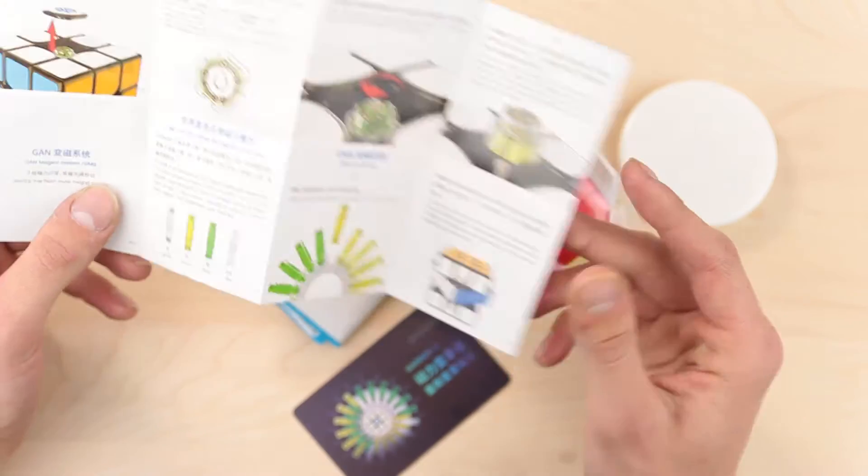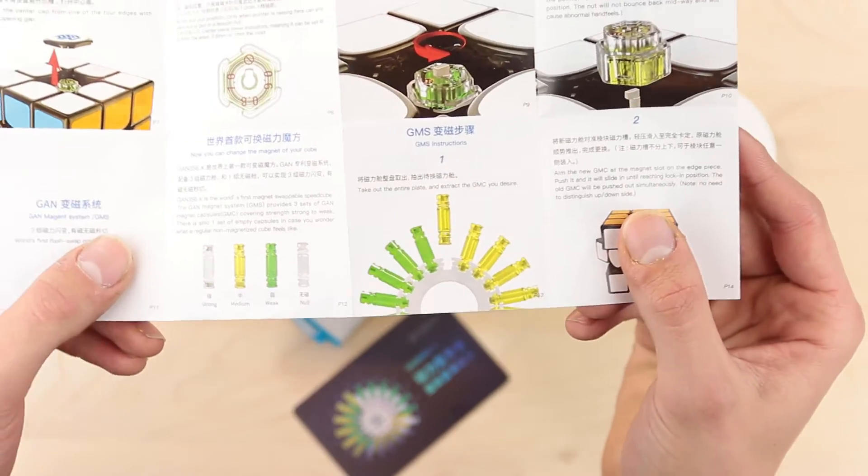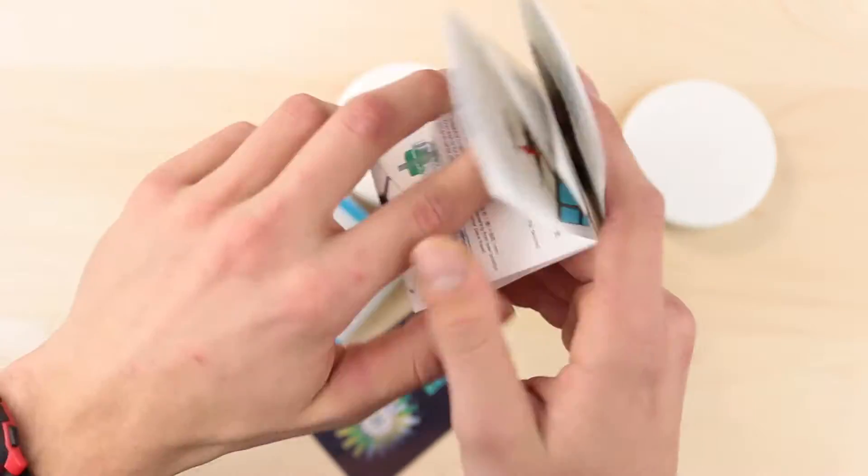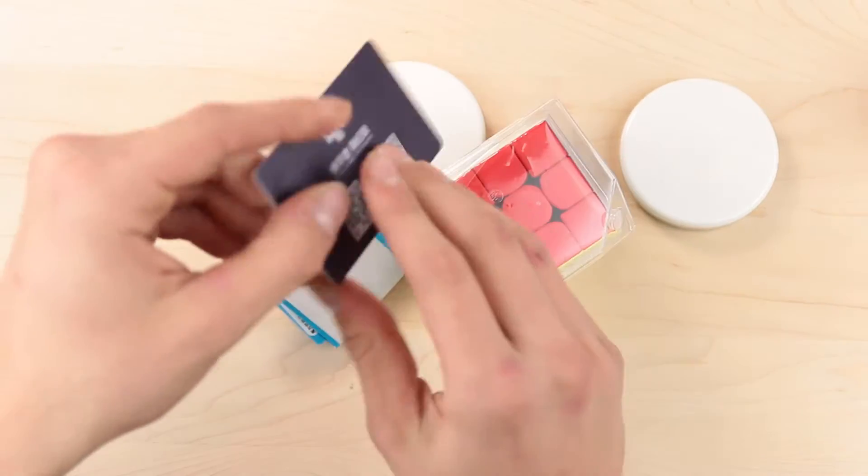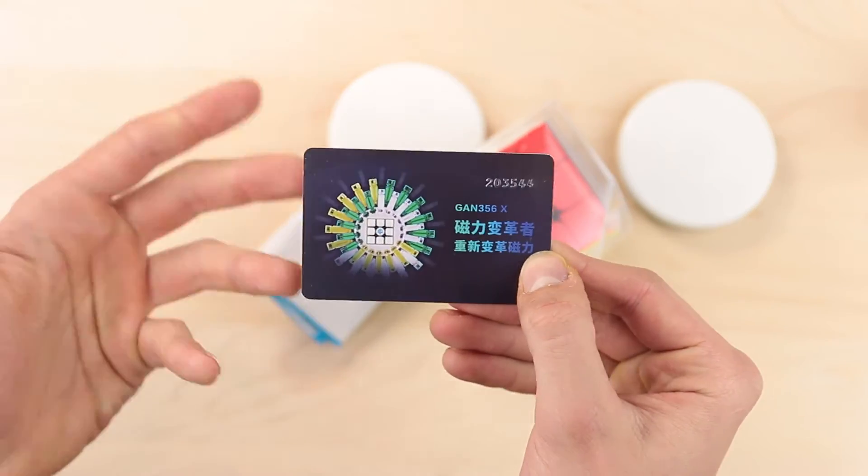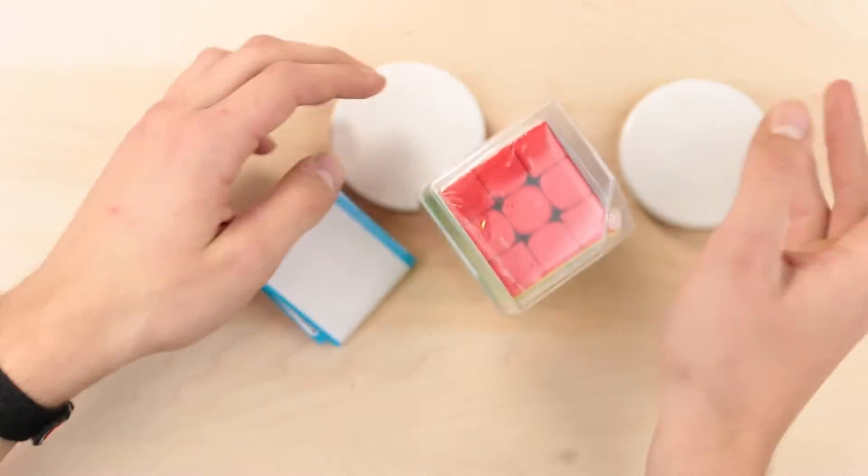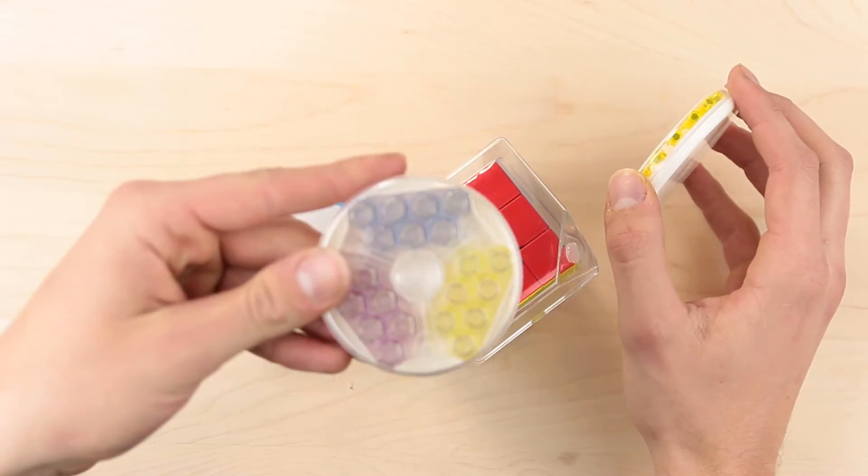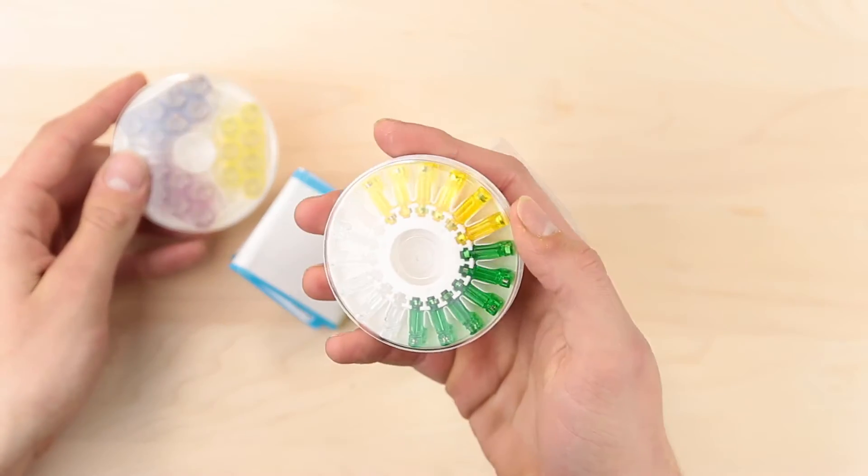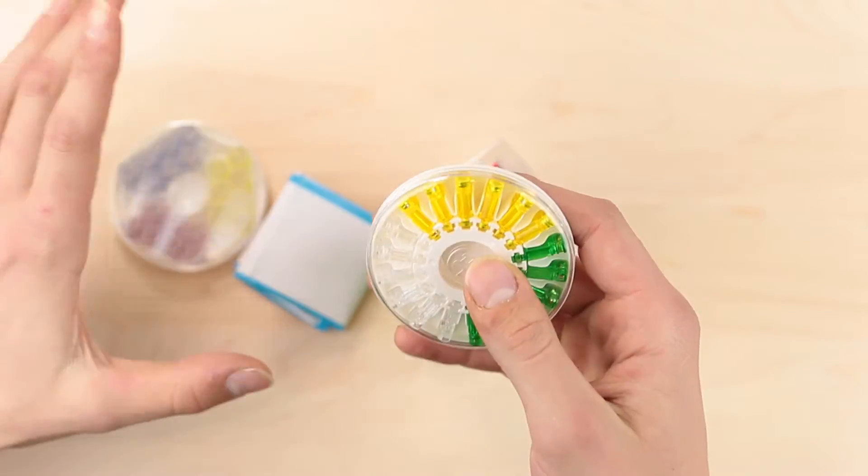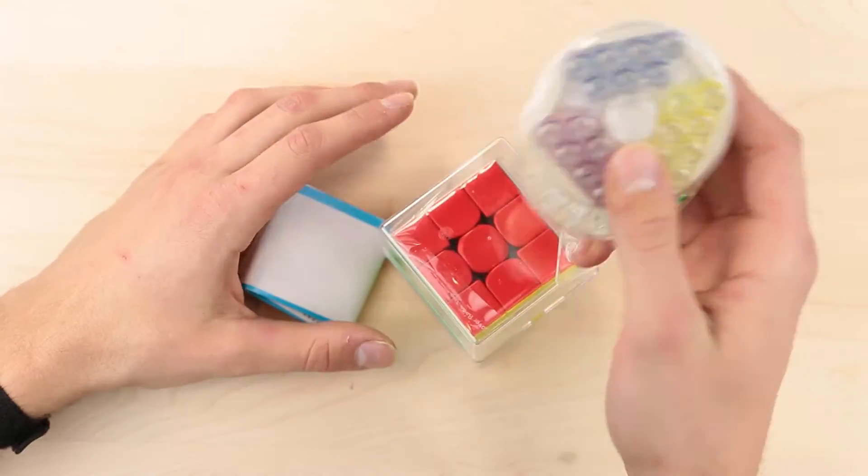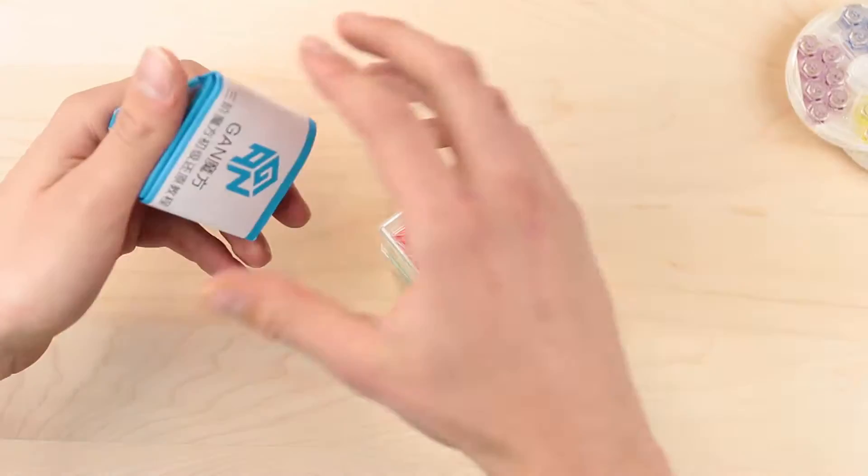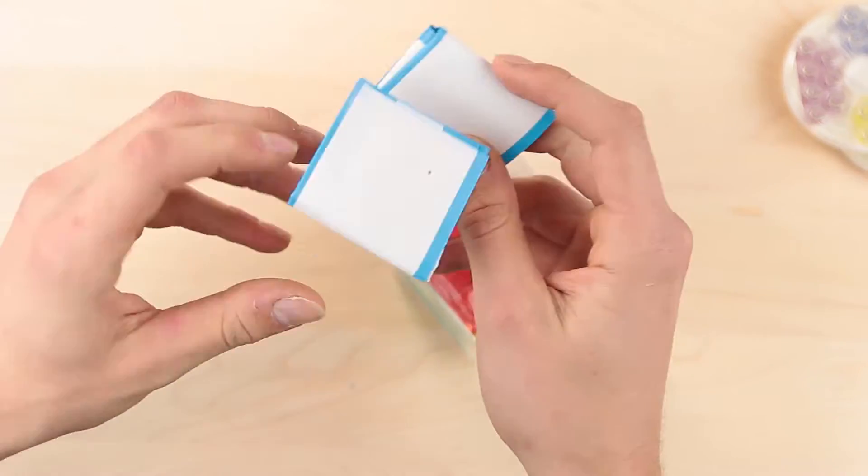So, it has the GES V3, as well as the GAN magnetic stuff, so that's really good. Also, it has a nice little card here. It also has the GES V3 nuts, and of course, the GES magnets, which I'm super excited about, because that's what is one of the big defining features of this cube, so we will look at these later. It also has GAN's pamphlet, which I don't even open up.